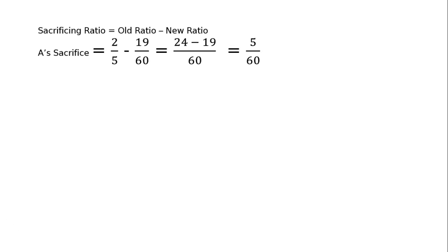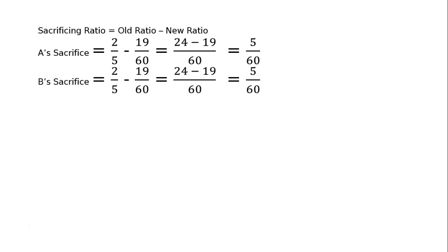The sacrificing ratio equals old ratio minus new ratio. A's sacrifice: 2/5 minus 19/60. Taking LCM 60, that is 24 minus 19 = 5/60. B's sacrifice is also 5/60. C retains original share, so C's sacrifice is 0. Therefore the sacrificing ratio of A:B is equal to 1:1.